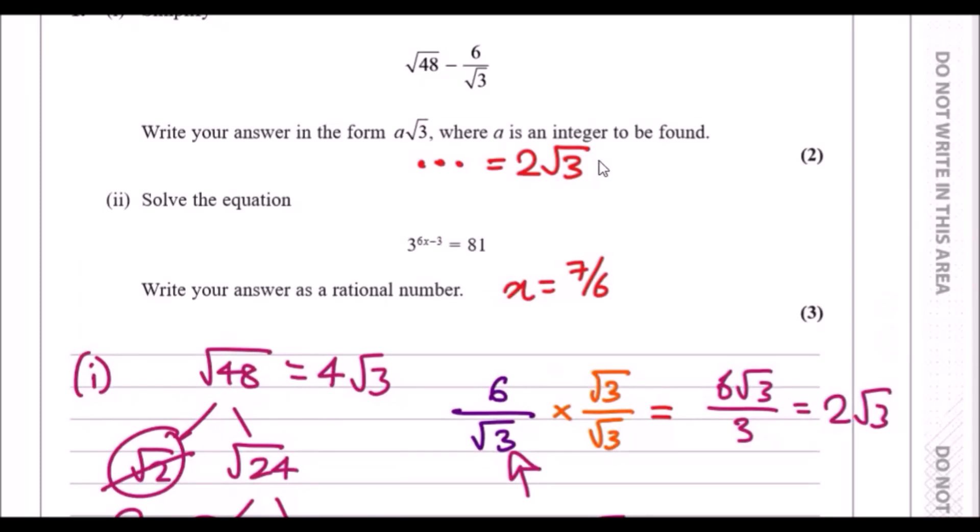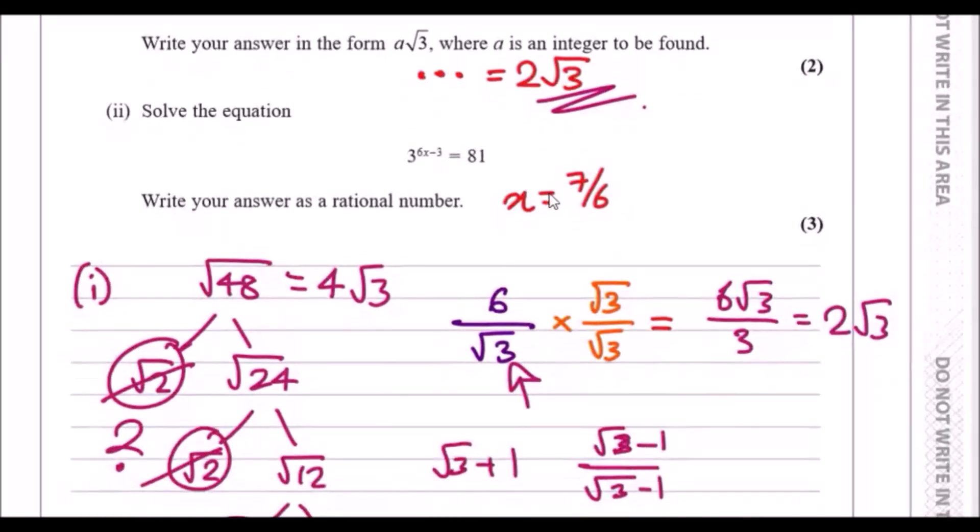Now let's look at part two. We've got 3 to the power 6x minus 3 equals 81. So we've got powers and indices. Write your answer as a rational number.